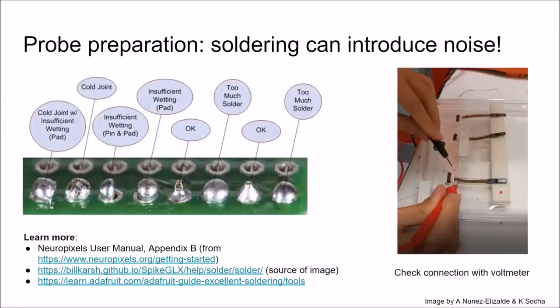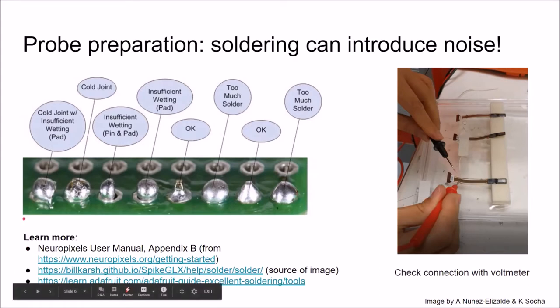You have to be careful with how to solder. It's usually recommended to use lead-based solder because it can be used at lower temperatures. But there is one warning: soldering can easily introduce noise. There are lots of ways you can do it wrong. There are lots of resources listed here that you can look at to learn how to do proper soldering. Once you have soldered, you can check your connection, for example with the voltmeter as shown here, to check whether your connections are correct.